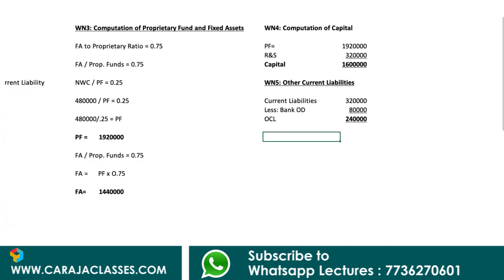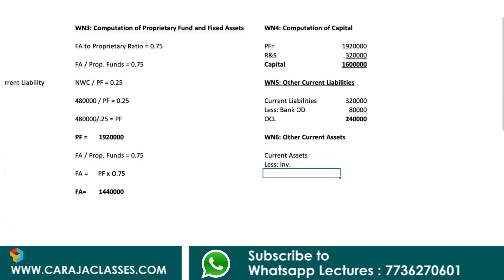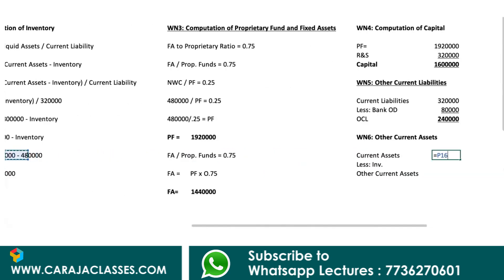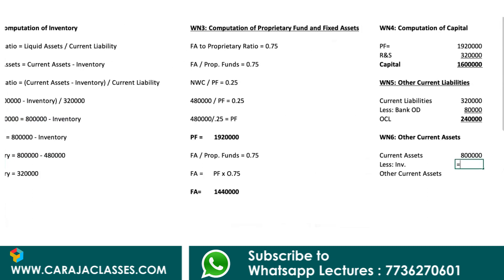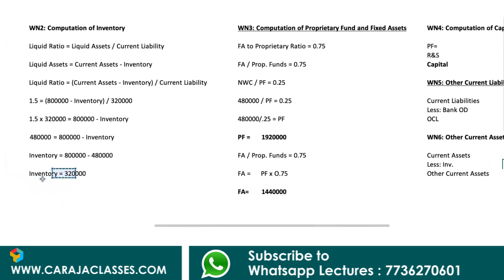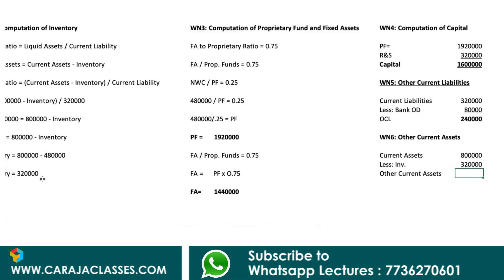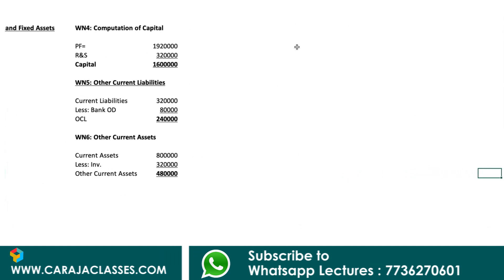Working Note 6 computes other current assets. Total current assets is 8 lakhs. Deducting inventory of 3,20,000, other current assets equals 8 lakh minus 3,20,000, which gives 4,80,000. Now all components are ready and we can prepare the balance sheet.